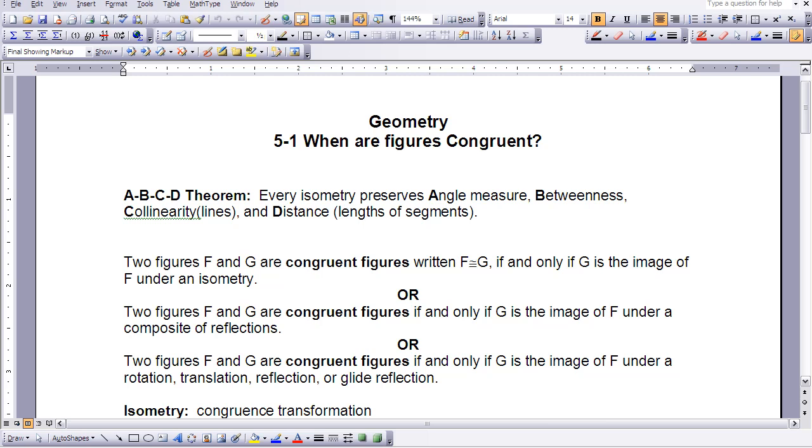Then we introduced the term isometry, which is a reflection or a composite of reflections. So if we have one reflection or a composite of reflections, we would still be preserving angle measure, betweenness, collinearity, and distance. That's where our ABCD theorem comes into play.